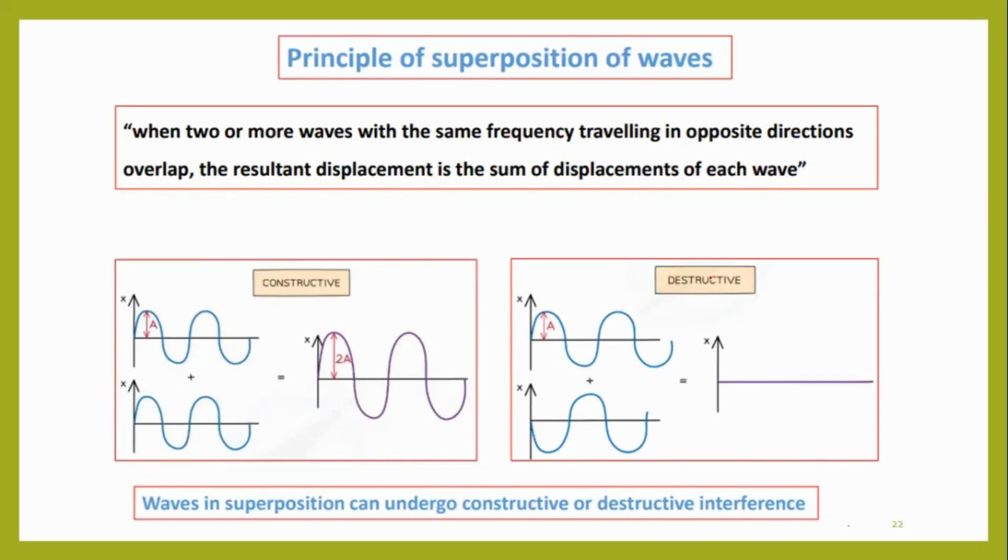Then we will come to the superposition of waves. When two or more waves with the same frequency traveling in opposite directions overlap, the resultant displacement is the sum of the displacements of each wave.